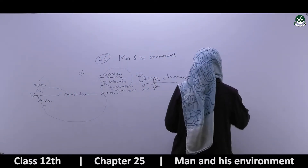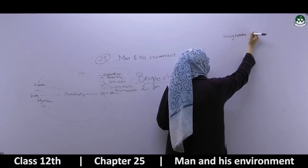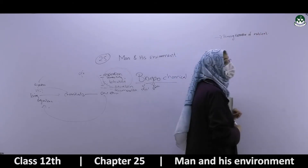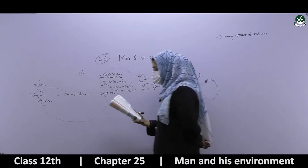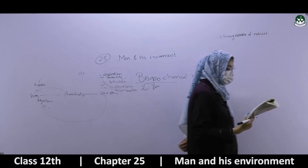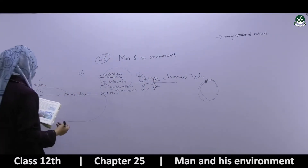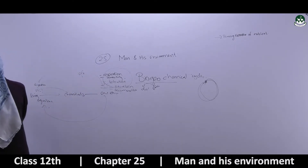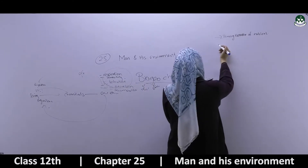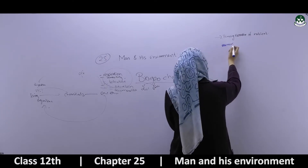Now we discuss primary reservoirs of nutrients. A reservoir is a storehouse — a place where chemicals are held for long periods of time. For example, coal deposits store carbon for a long period. When chemicals are held for only a short period, they are in exchange pools. Humans and animals are examples of exchange pools.